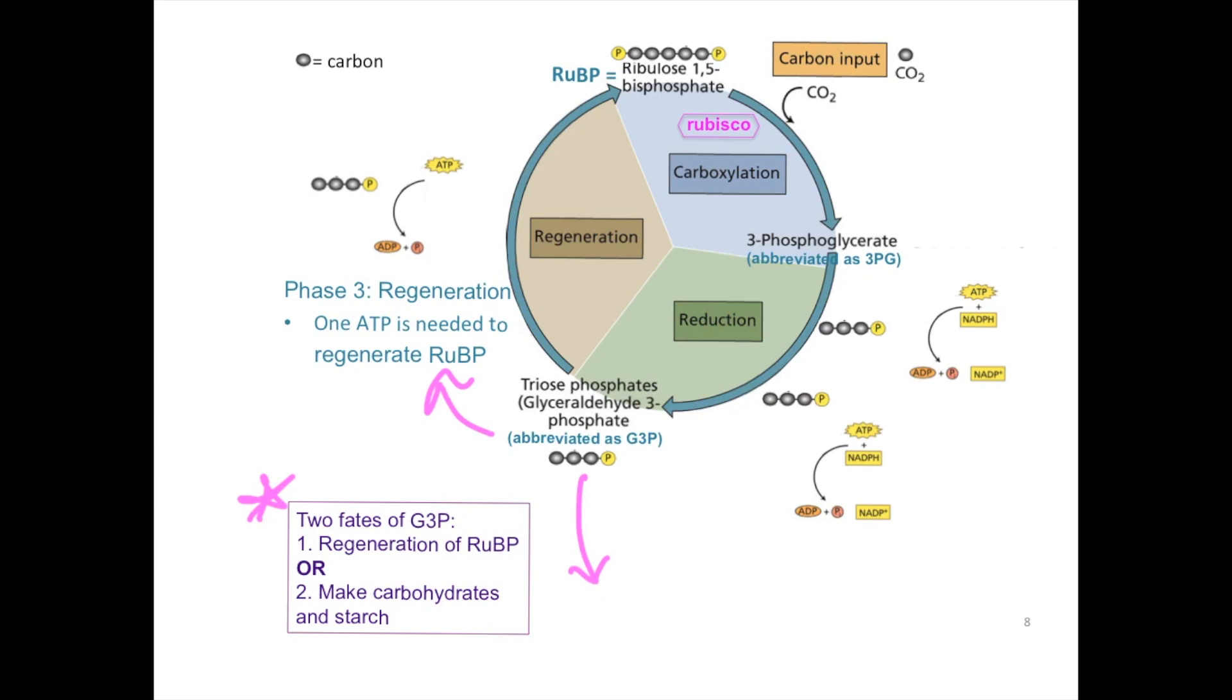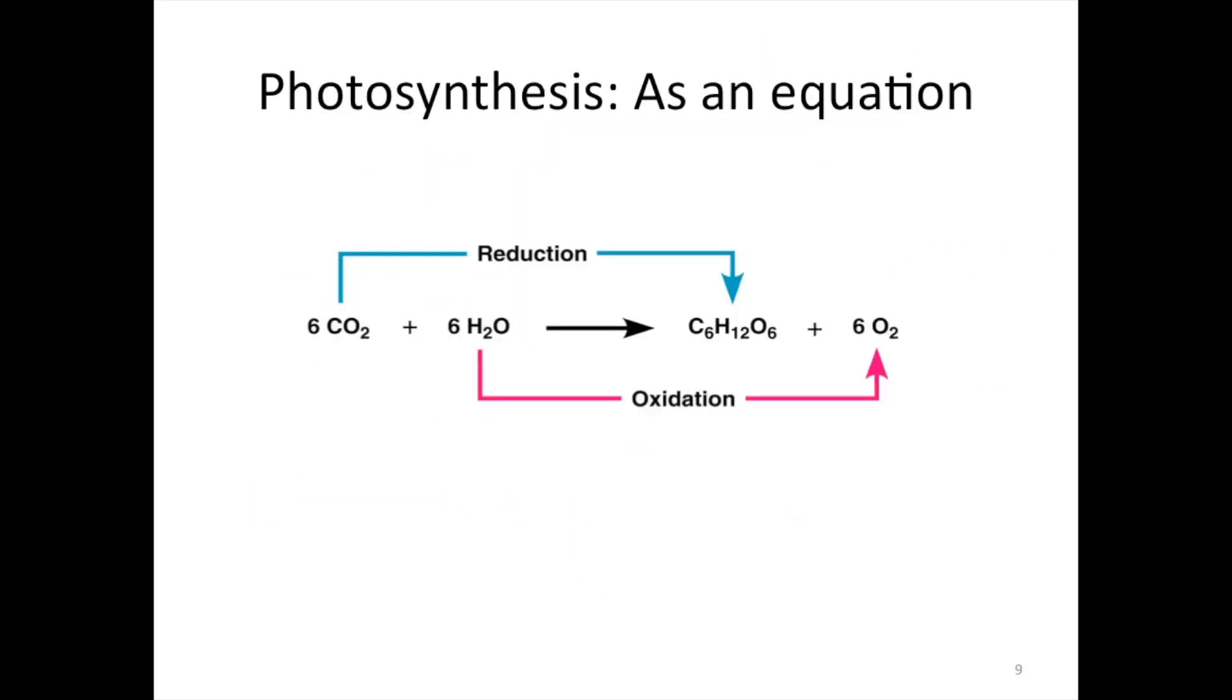So this all seems quite simple, right? If we have two G3Ps, it simply splits off, it could become a sugar, or it could go on to regenerate RuBP and therefore keep the Calvin cycle going. But I want to bring us back to the issue of accounting for the number of carbons. As you may have noticed, I've gone through the Calvin cycle in the simplest of forms. As in, we have used only one RuBP, and that is the acceptor of a CO2 molecule with the help of rubisco.